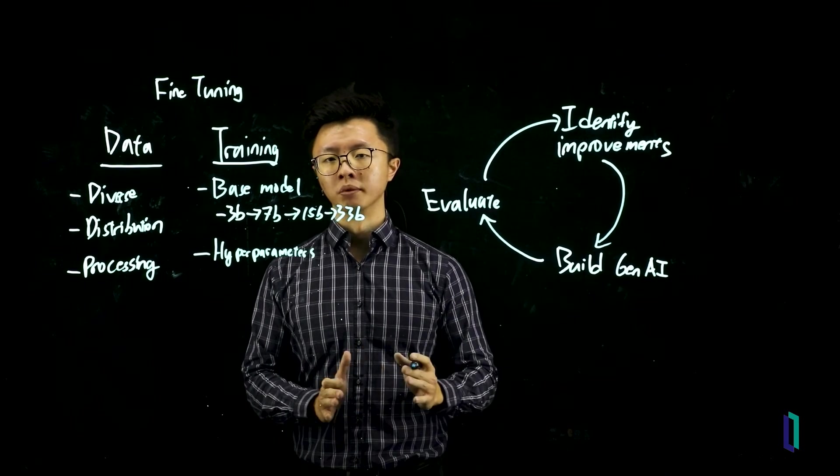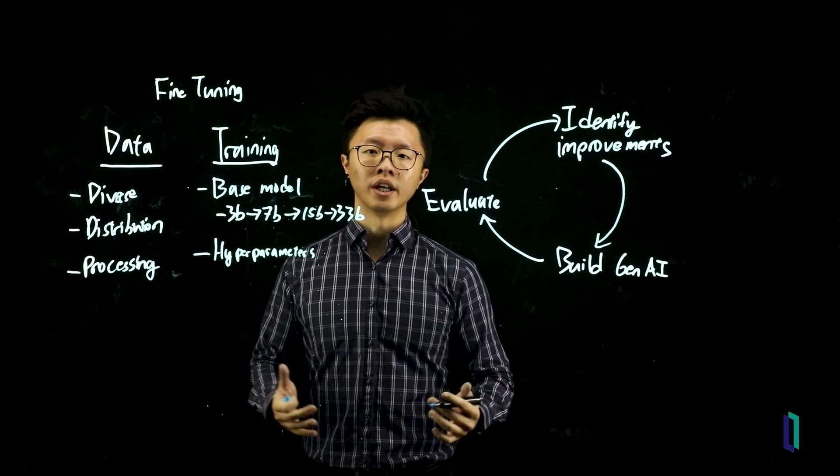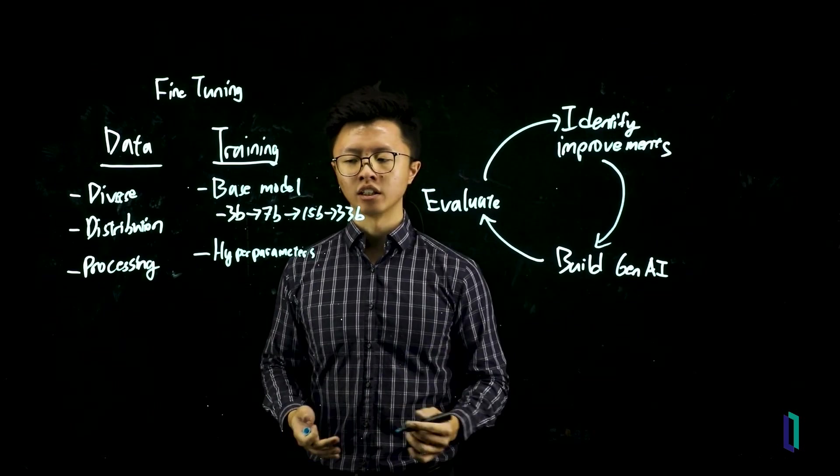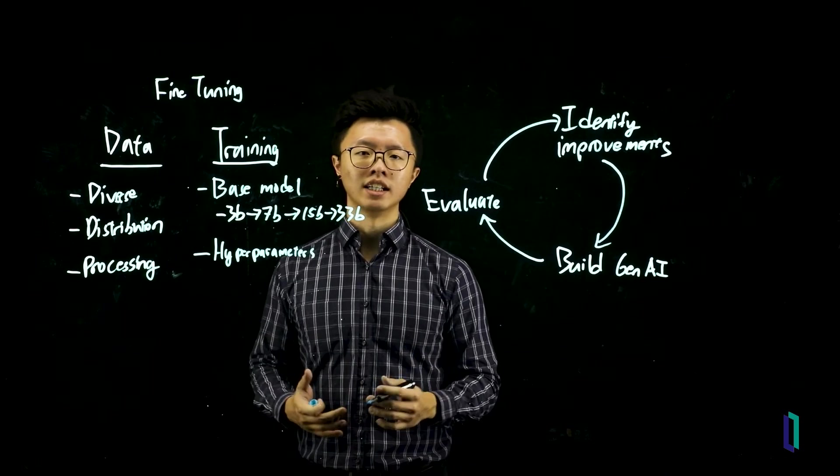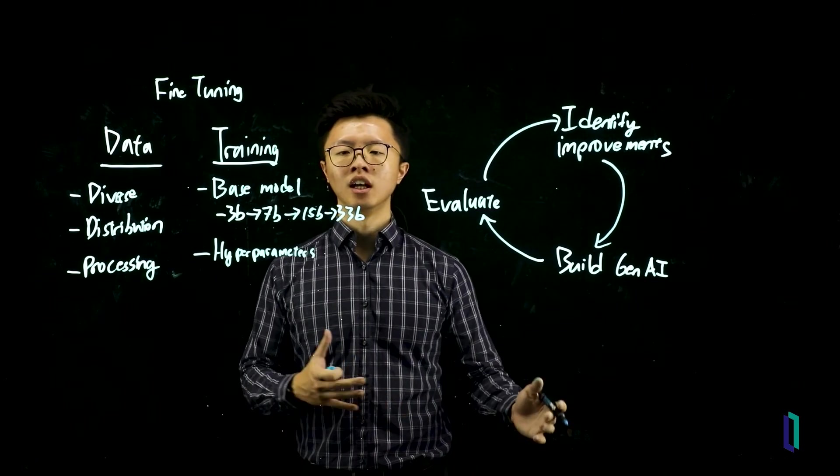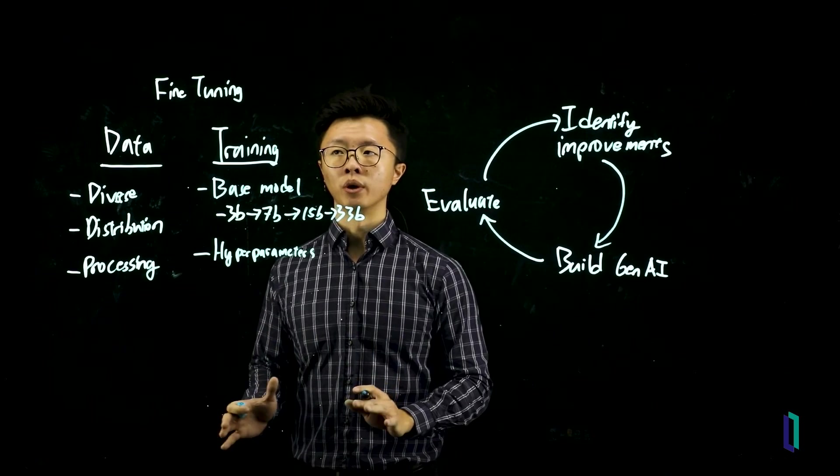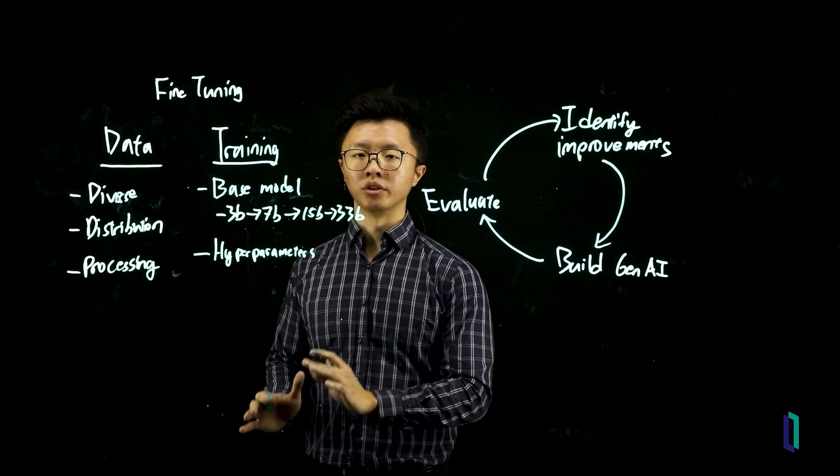And there is some research to show that so long your parameters are within a pretty large range, it doesn't really affect model performance that much. But also know that there are also some trade-offs here. For example, for LoRA training, if you choose a bigger R, it's going to take much longer and train more parameters. On the other hand, it could potentially be better. So these are all things to consider when looking at improving your fine tuning model.